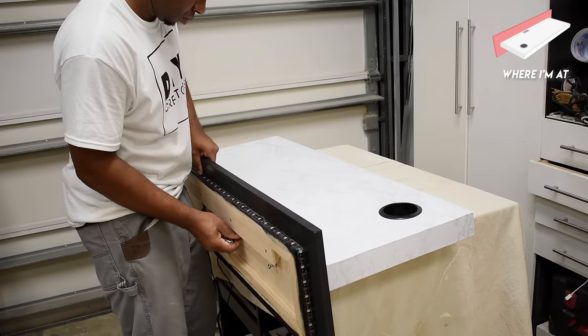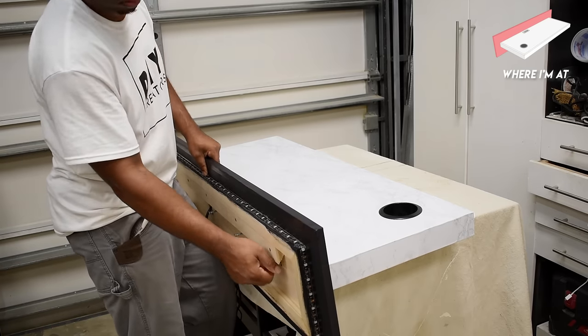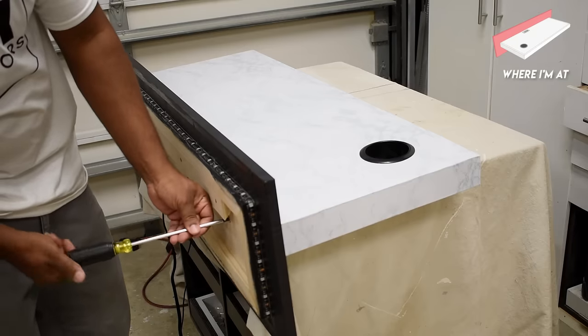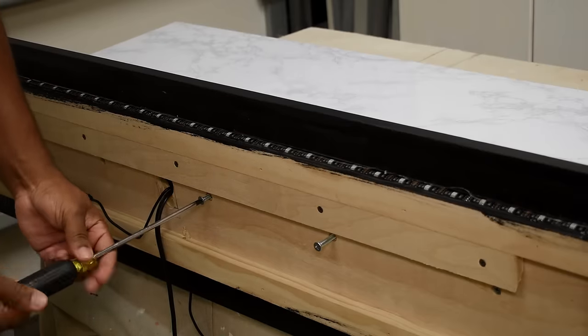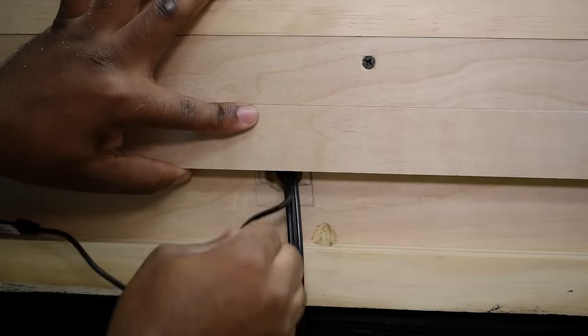Now I can go ahead and attach the back panel to the desk using the T-nuts that are already in the desk and also using these quarter-inch bolts. This is the look I was going for. I wanted to make sure that the power cords were clear and had free movement.